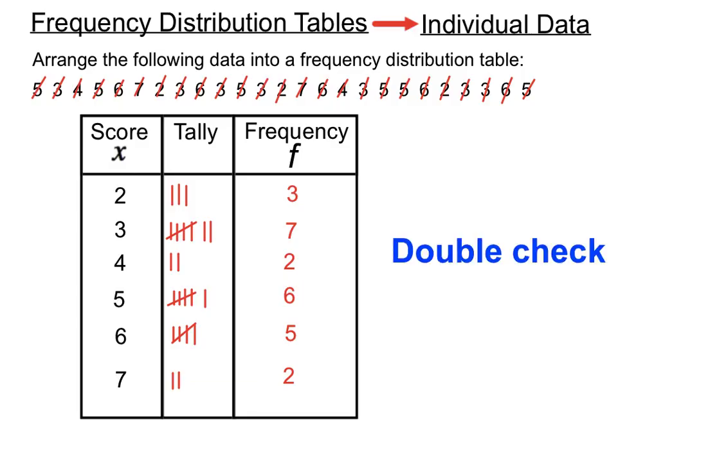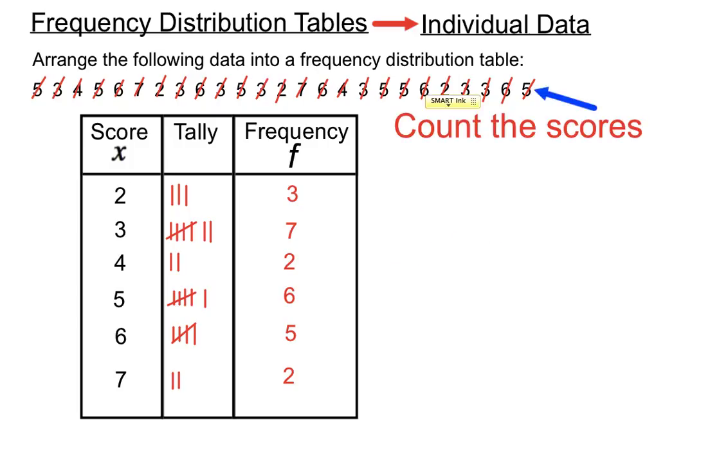But we should just double check our work here. We don't want to miss any scores or put any extra ones in. Now a double check we can do is to count the number of scores. Sometimes the question says arrange the following 25 scores into a frequency distribution table. If we count that carefully, we have 25 scores that we've just crossed off.